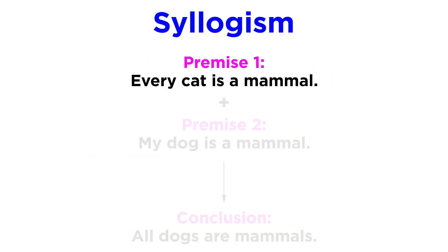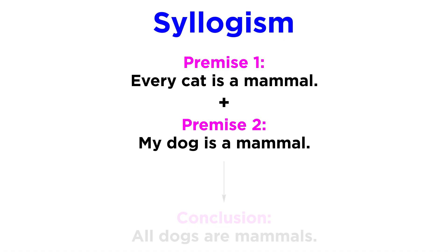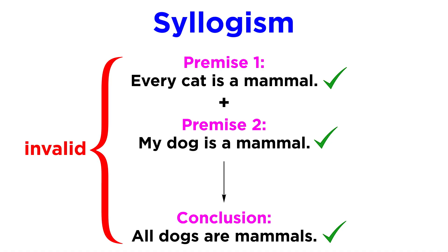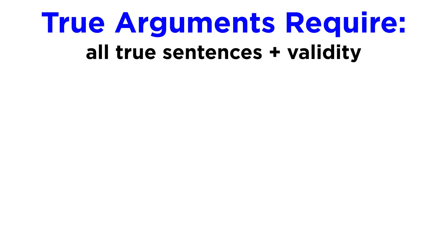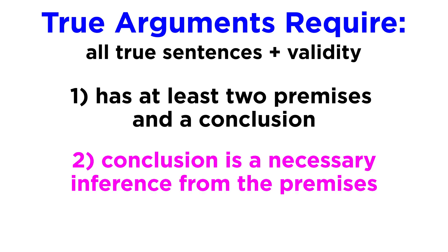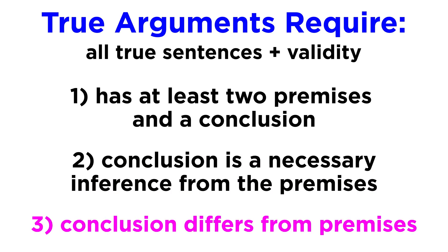Or consider this: every cat is a mammal; my dog is a mammal; therefore all dogs are mammals. Each of these statements are true individually. However, the conclusion does not follow from its premises, and thus it's an invalid argument. Therefore, an argument is true if and only if every sentence composing it is true, and they're valid, in that the argument: one, has at least two premises and a conclusion; two, the conclusion is a necessary inference from the premises; and three, the conclusion is different from the premises.